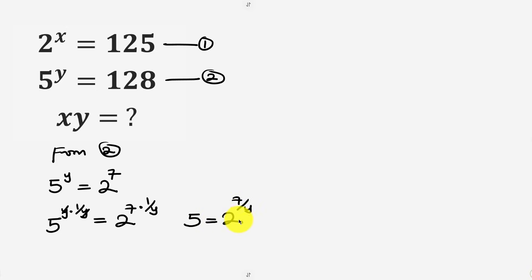Very good. So 5 is equal to 2 to the power of 7 over y. Now we're going to be substituting this 5 in equation 1.